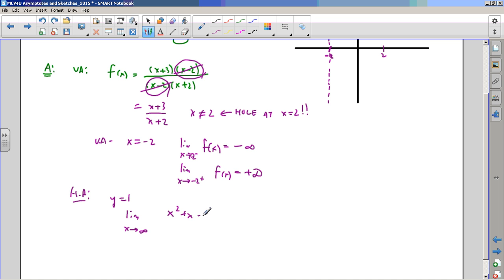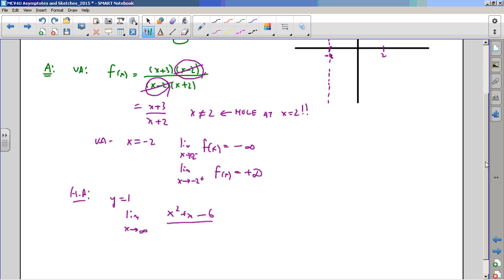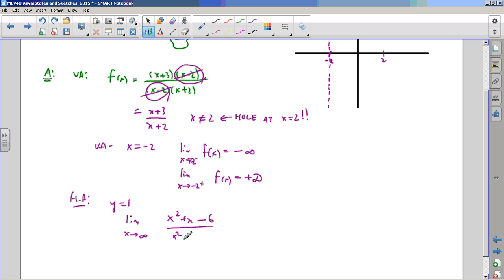x squared plus x minus 6. Notice I'm using the expanded version here. Why am I doing that? Because it's easier to factor out the value of x squared. 1 plus 1 over x minus 6 over x squared, all over x squared. 1 minus 4 over x squared.